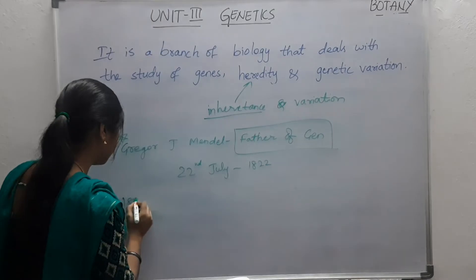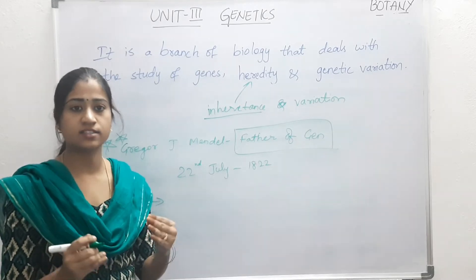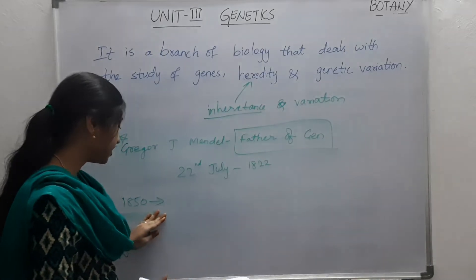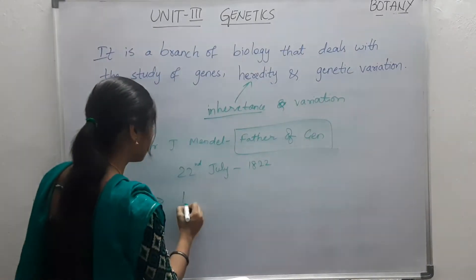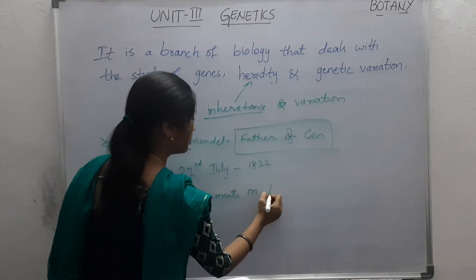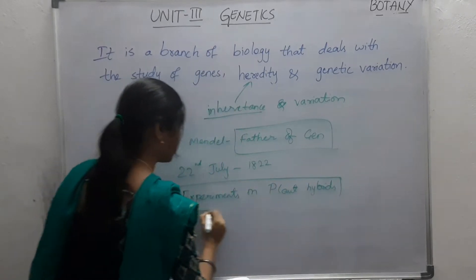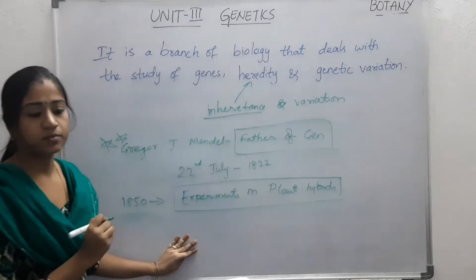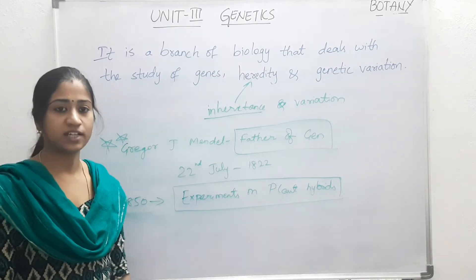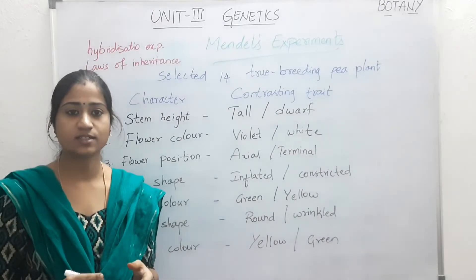He was born on 22nd July 1822. In around the 1850s, he started his experiments on the transmission of hereditary traits in plant hybrids. He published all his results under the title 'Experiments on Plant Hybrids.' The observations he made while growing pea plants in his garden laid the foundations for the study of heredity and modern genetics.